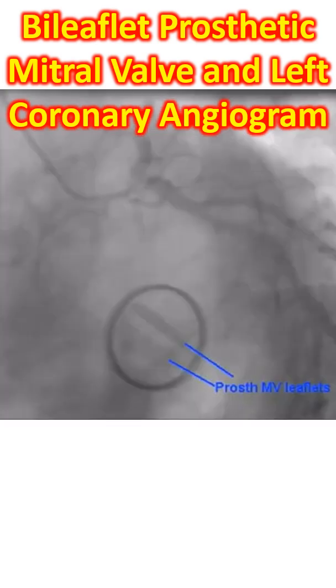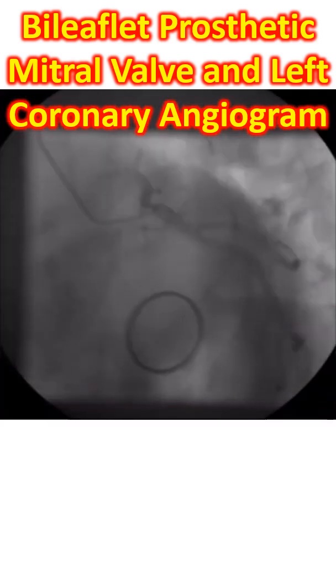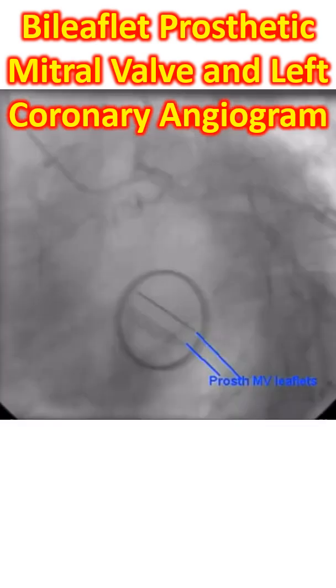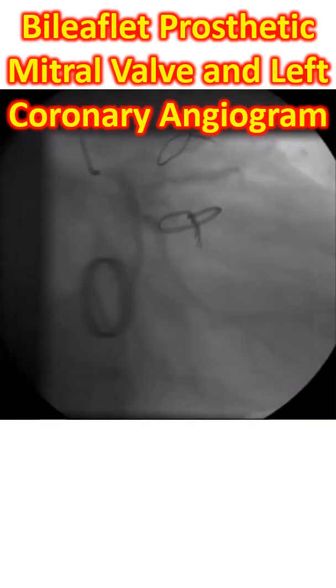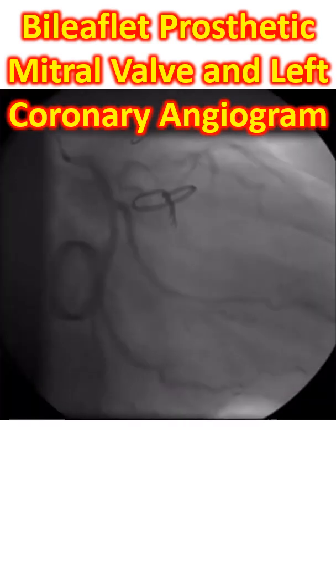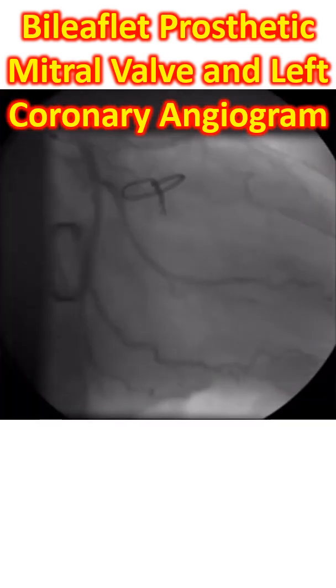The background shows a coronary angiogram. A Tiger catheter is seen in the left coronary ostium. This is another view — the RAO caudal view. The earlier one was the LAO caudal view.